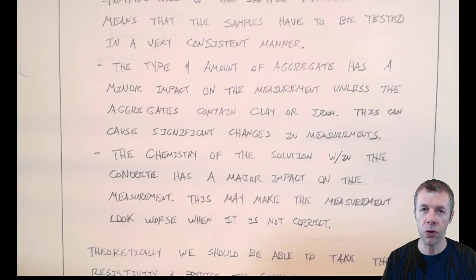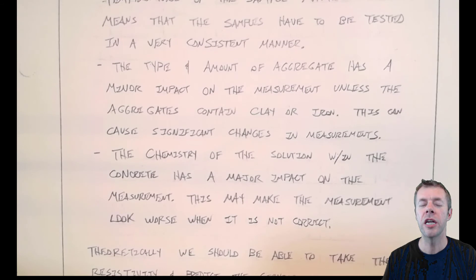But the chemistry of the solution in the concrete has a major impact on the measurement. This means that if my chemistry of my fly ash changes, from one measurement to another, they change sources, then that could have a major impact on the measurements the test would make. Now that could be useful. It could be a warning that lets you know that fly ash changed. But this makes it hard to pick a single resistivity measurement to get everything you need.